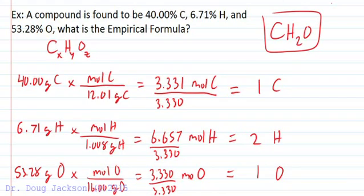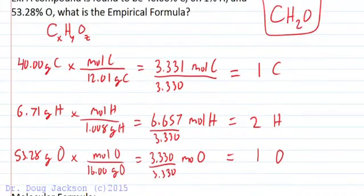If we did not get whole numbers here, we would have to multiply by a simple whole number to get the whole numbers. And so there'll be examples you see in your text that you have to do this for.